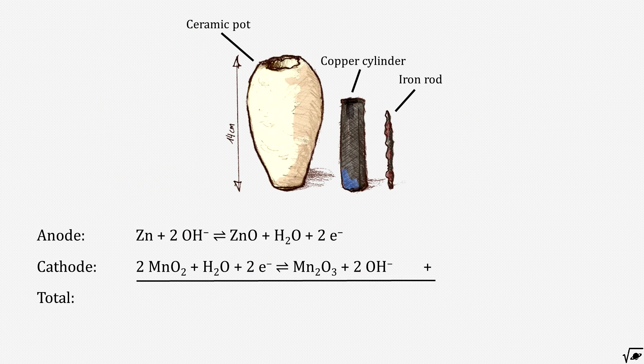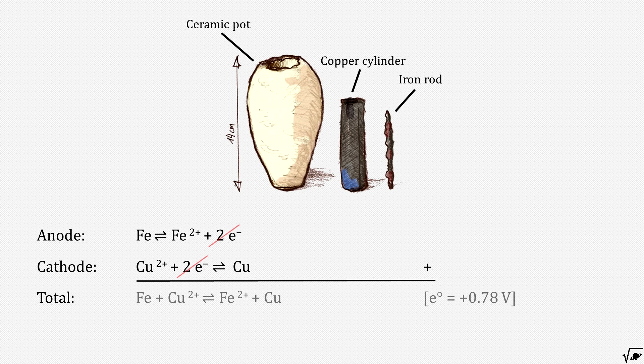Now switch the half reaction of zinc for that of iron, the half reaction of manganese dioxide for that of copper, and the electrolyte alkaline for a ceramic pot filled with, for example, vinegar or wine, and you've got yourself a working Baghdad battery.